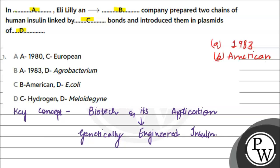Prepared two chains of human insulin linked by Dash bonds. How were the two chains joined? Disulfide bonds. Linked by disulfide bonds. And introduced them in plasmids of? In the plasmids of E. coli.